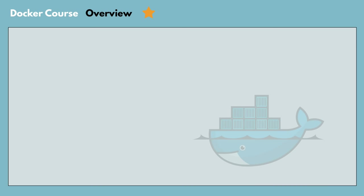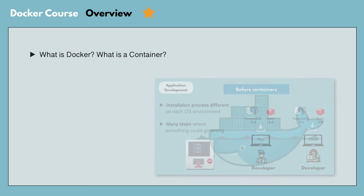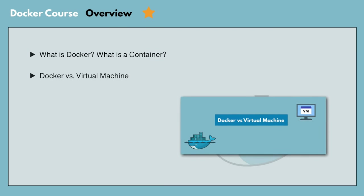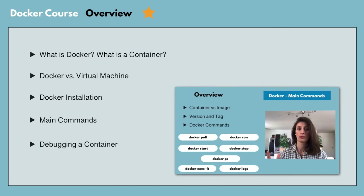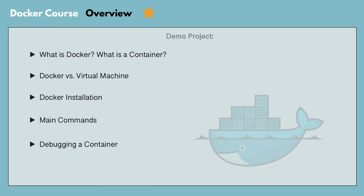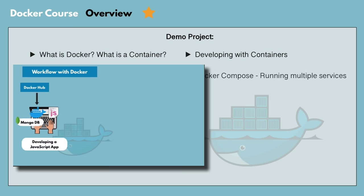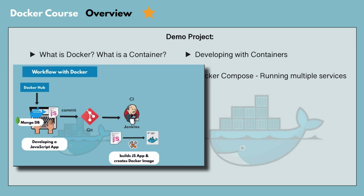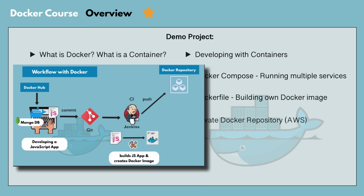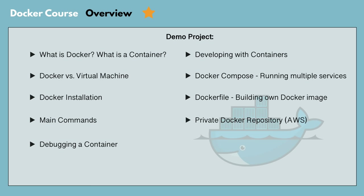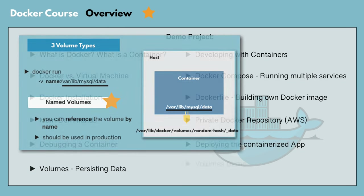Let's quickly go through the topics covered in this course. We'll start with the basic concepts of what Docker is and what problems it solves, including the difference between Docker and virtual machines. After installing Docker, we'll go through all the main Docker commands to start, stop, and debug containers. Then we'll see how to use Docker in practice through a complete workflow: developing locally with containers, running multiple services with Docker Compose, building our own Docker image with a Dockerfile, pushing to a private Docker repository on AWS, deploying our containerized application, and finally persisting data using different volume types.